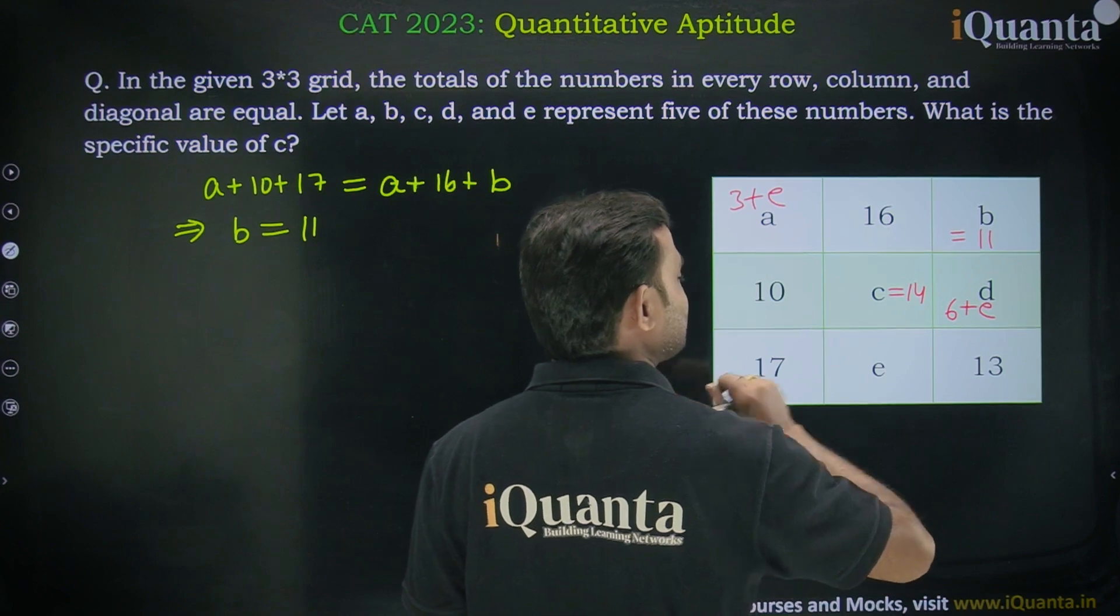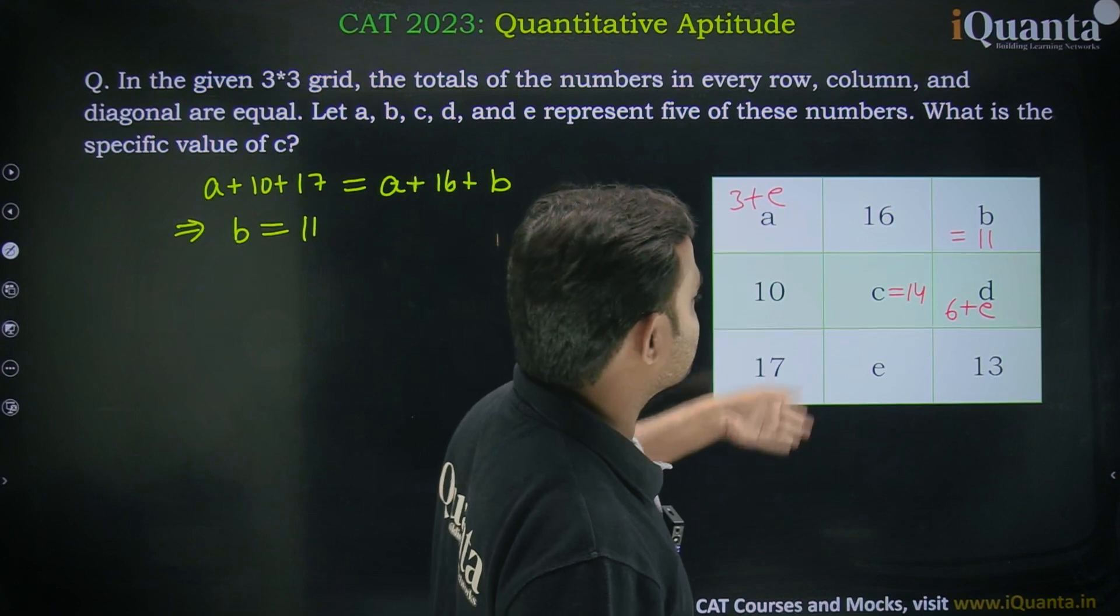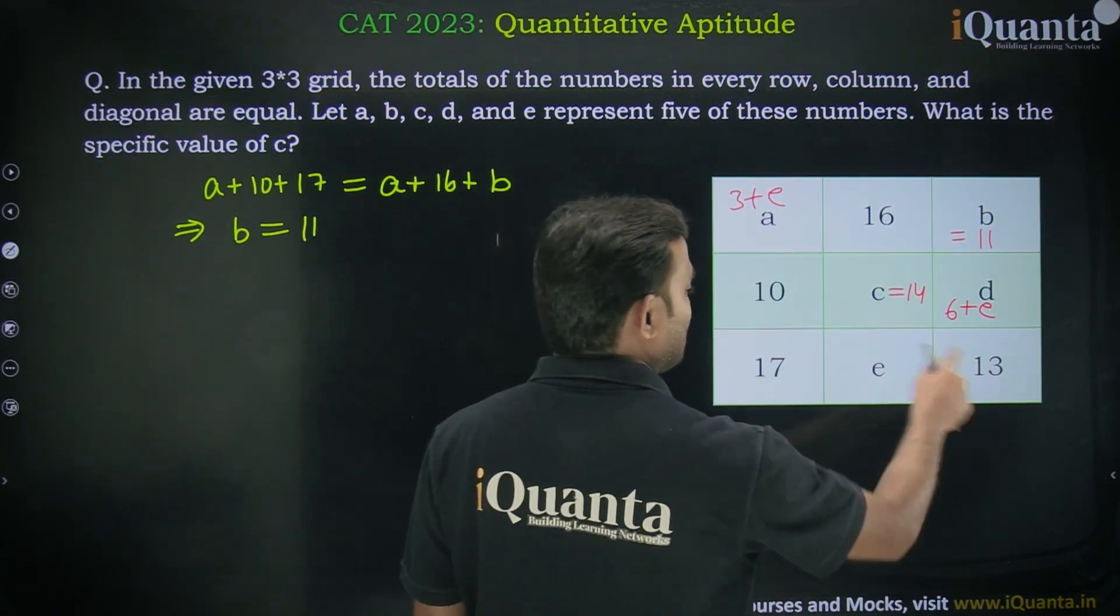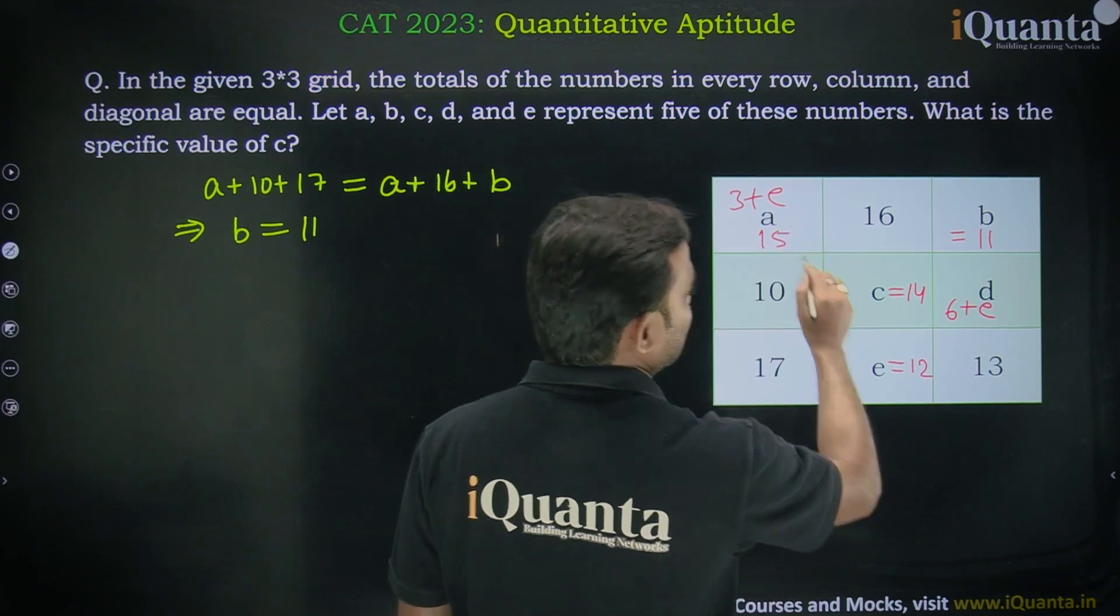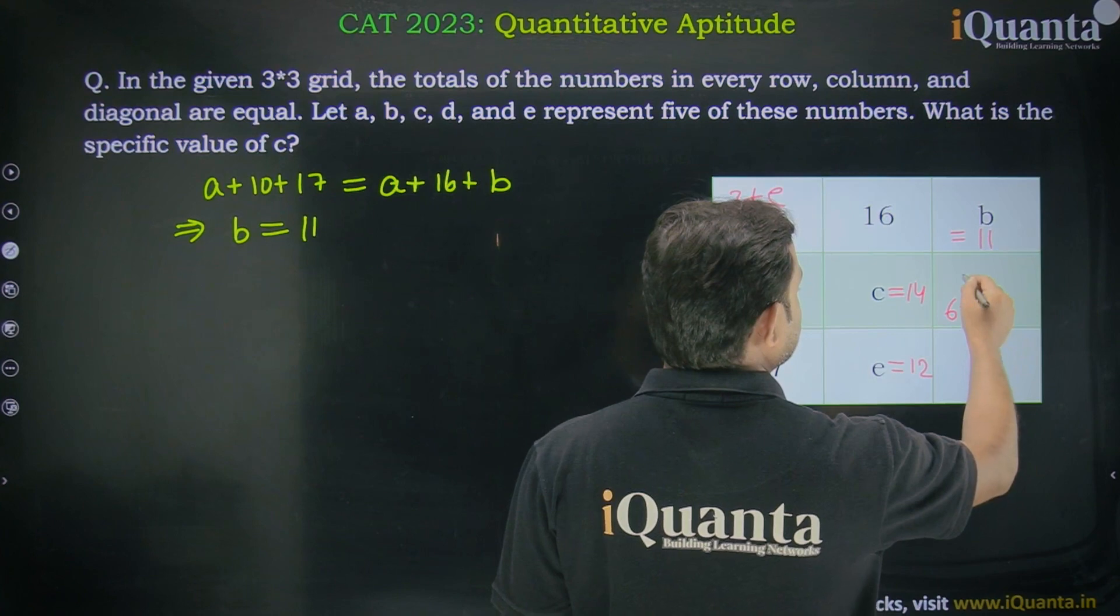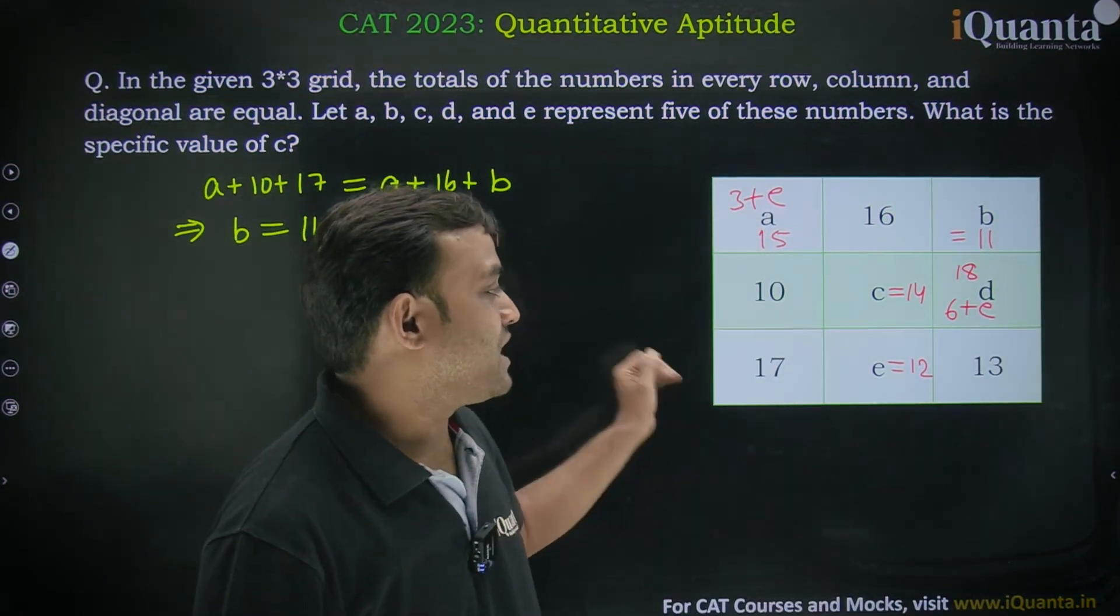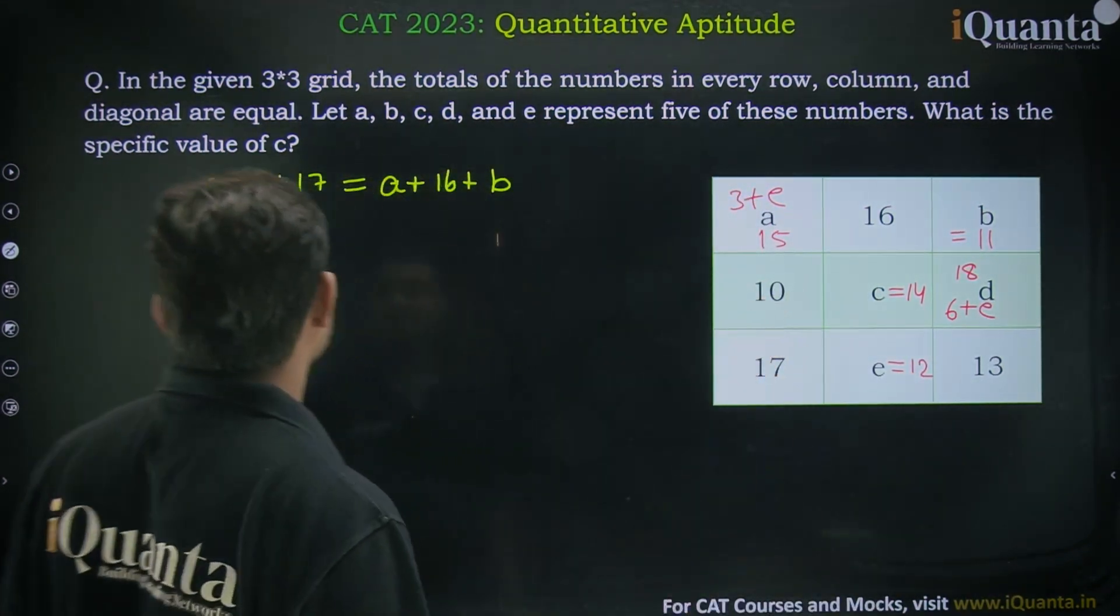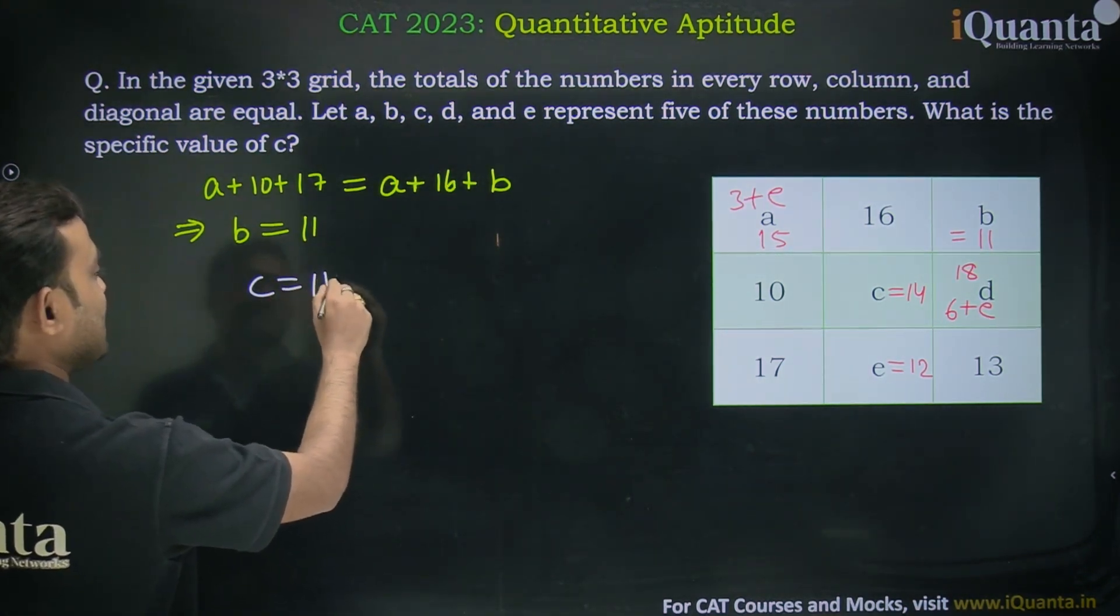Sum of all these numbers is 15 + 25 + 17 = 42 in each row and column. We can find all values individually: e = 12, a = 15, d = 12 + 6 = 18. You can check that sum of all numbers in each row, column, and diagonally is 42. The value of c is 14, and that is our answer.